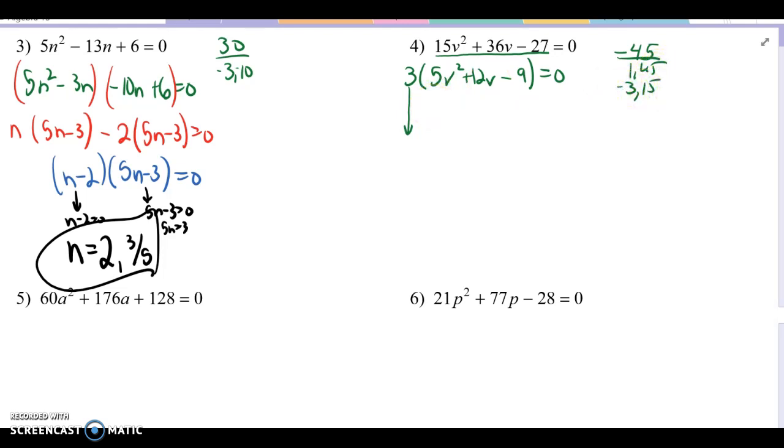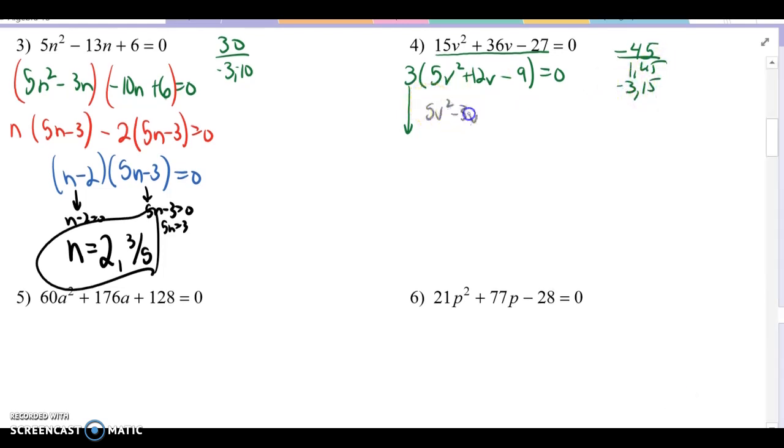We can write this one. 5v squared minus 3v plus 15v minus 9 equals 0. Split that 12 into those two terms. Group, group, group. First GCF is simply going to be v. 5v minus 3. The second one is going to be a 3. And we get 5v minus 3 on the inside. Those are the same. So we have 5v minus 3 times v plus 3. And I can't forget about this 3 that I factored out at the beginning. I drew my arrow down. I want to make sure I keep that involved. Now we have this as our completely factored form.